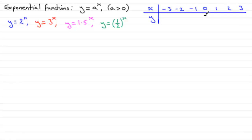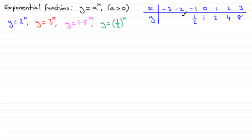So 2 to the power 0 is 1. Then 2 to the power 1 is 2, 2 squared is 4, 2 cubed is 8. For negative powers: 2 to the minus 1 is 1 over 2, which is 0.5; 2 to the minus 2 is 1 over 4, which is 0.25; and 2 to the minus 3 is 1 over 8, which is 0.125.